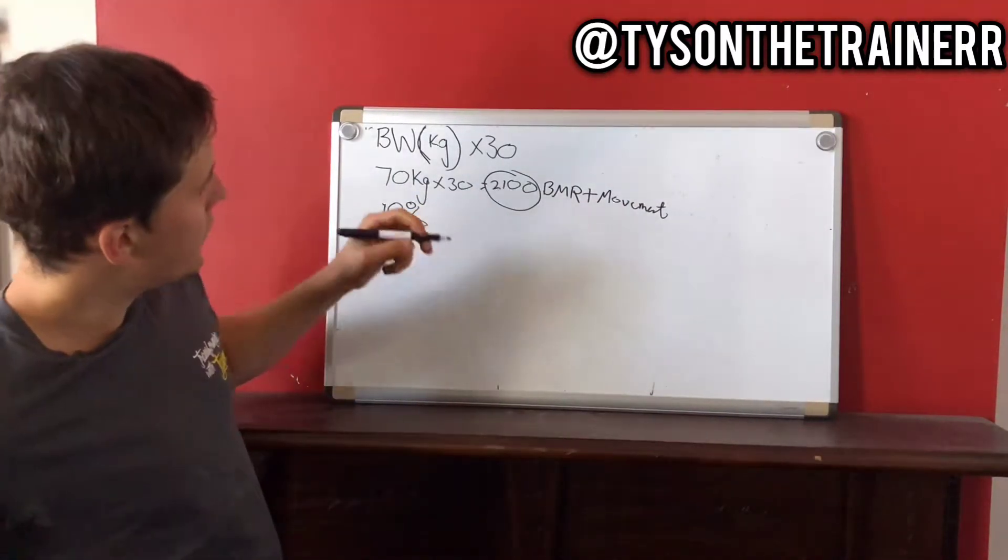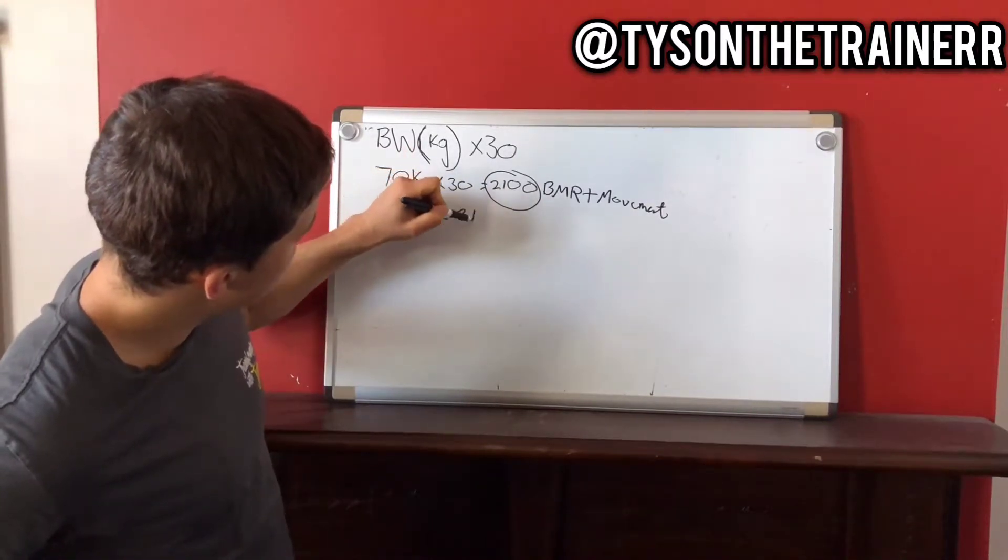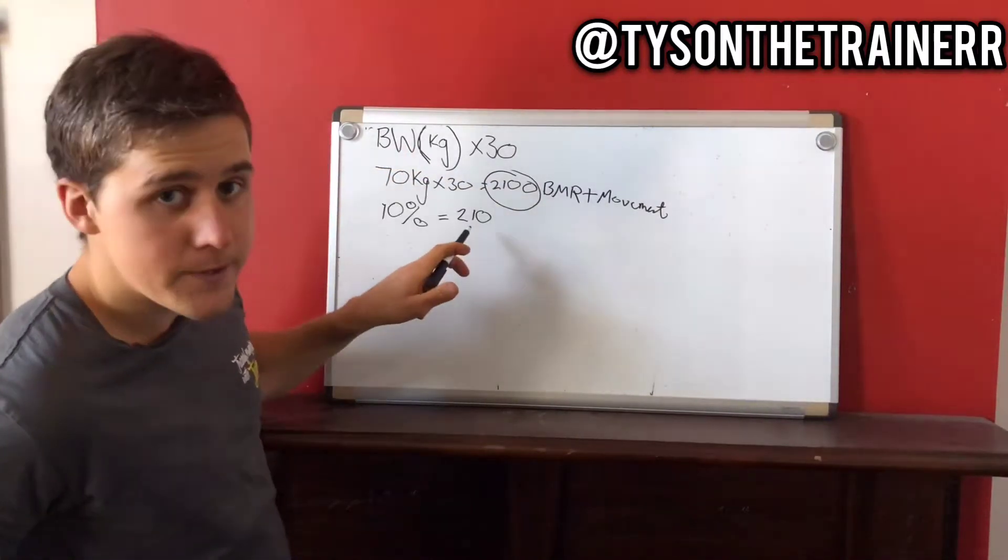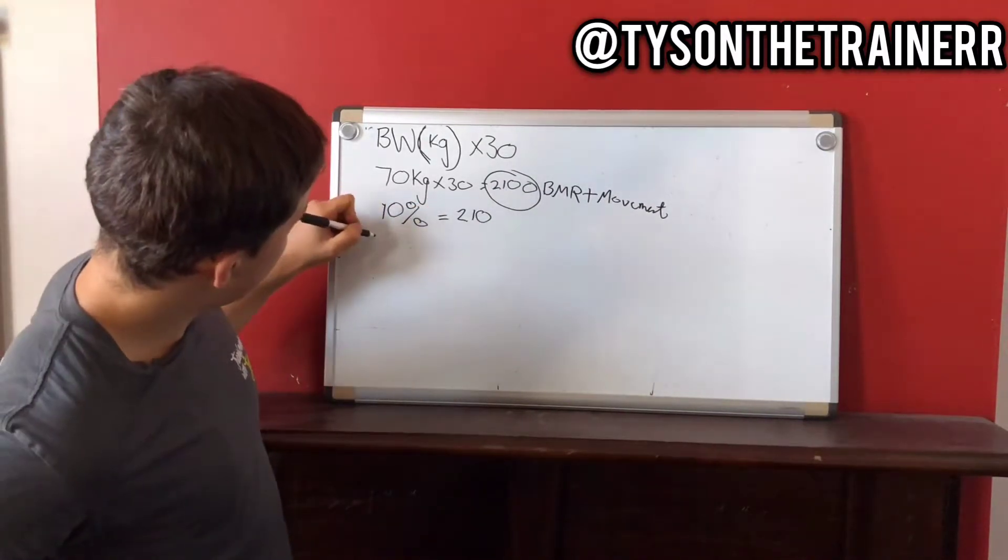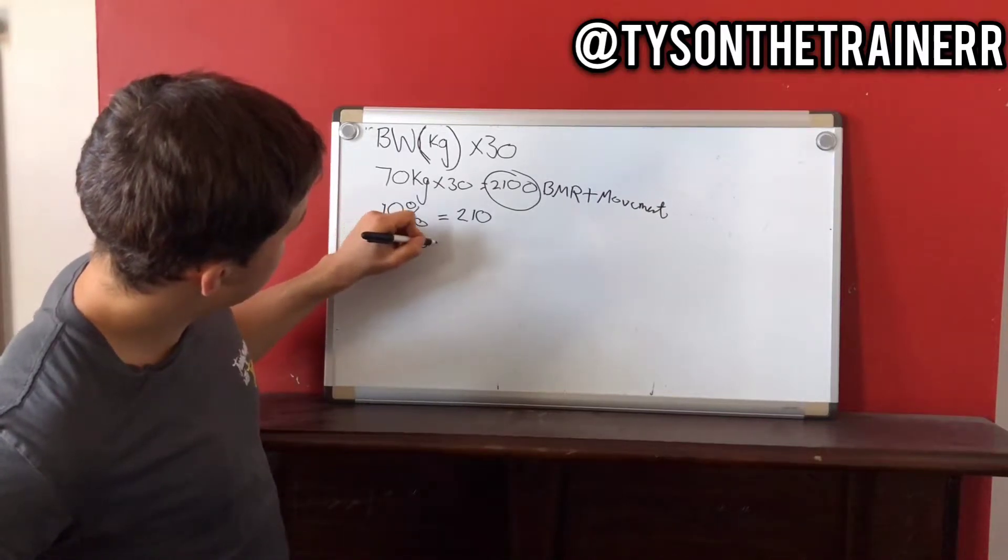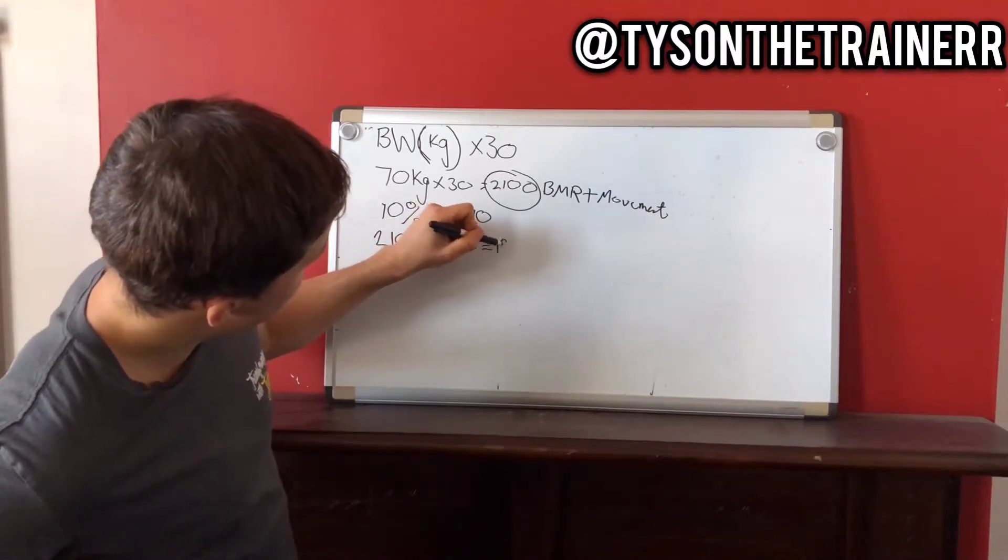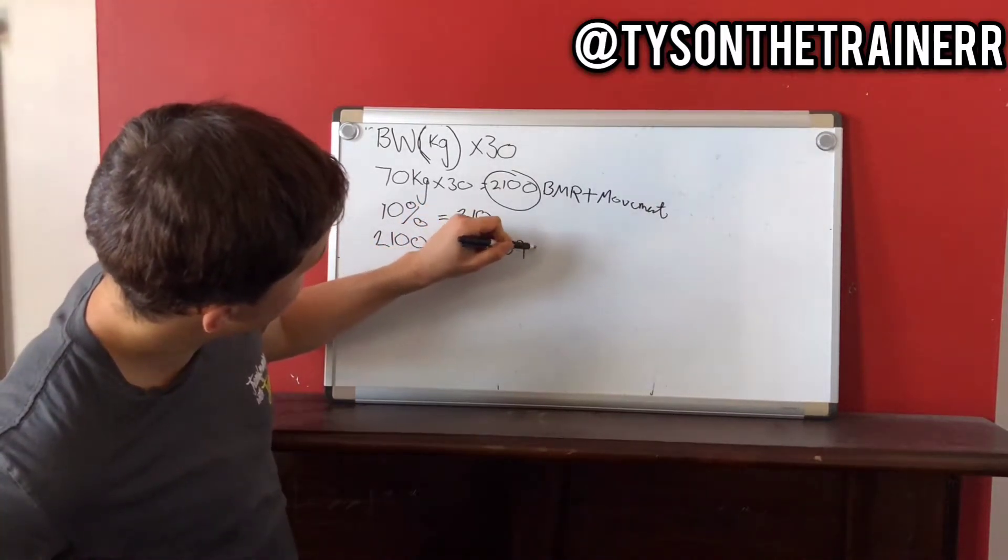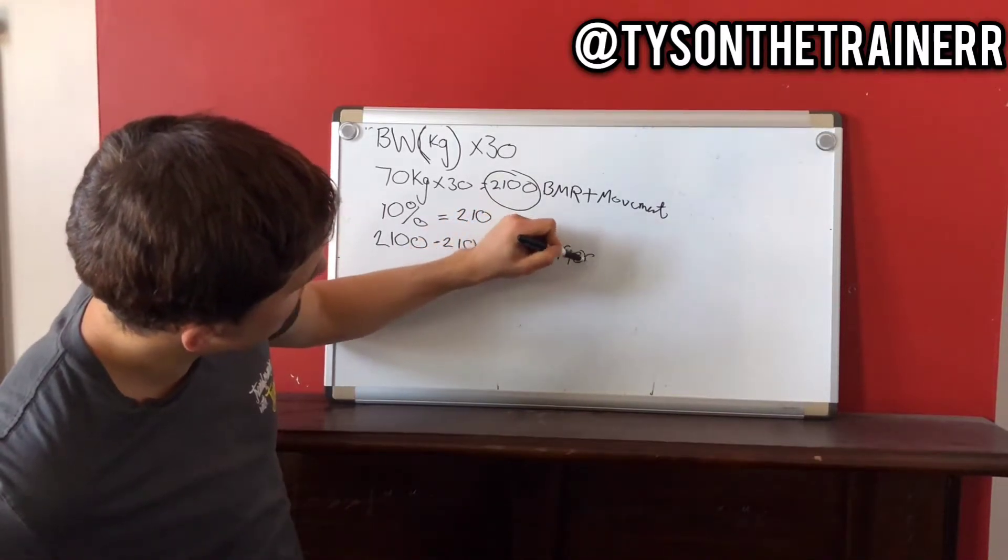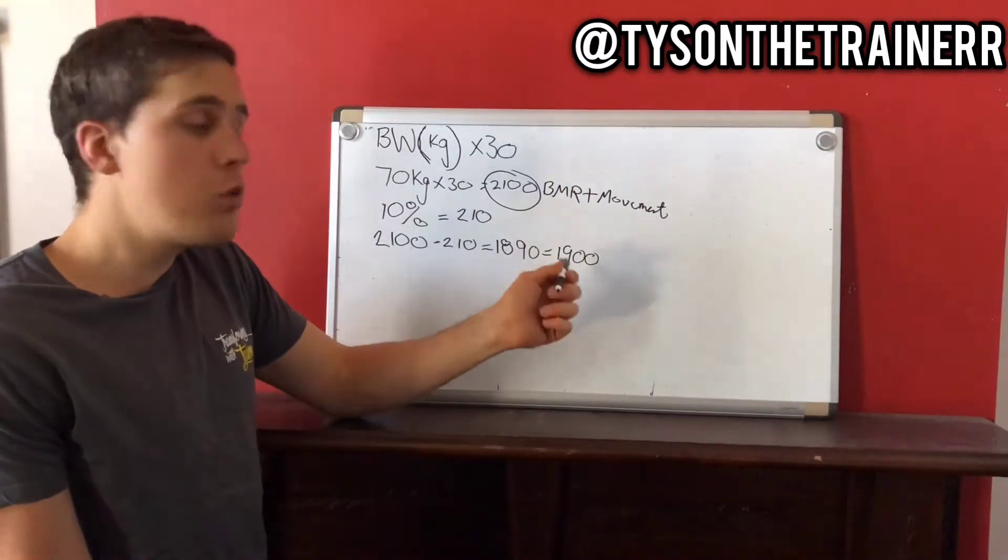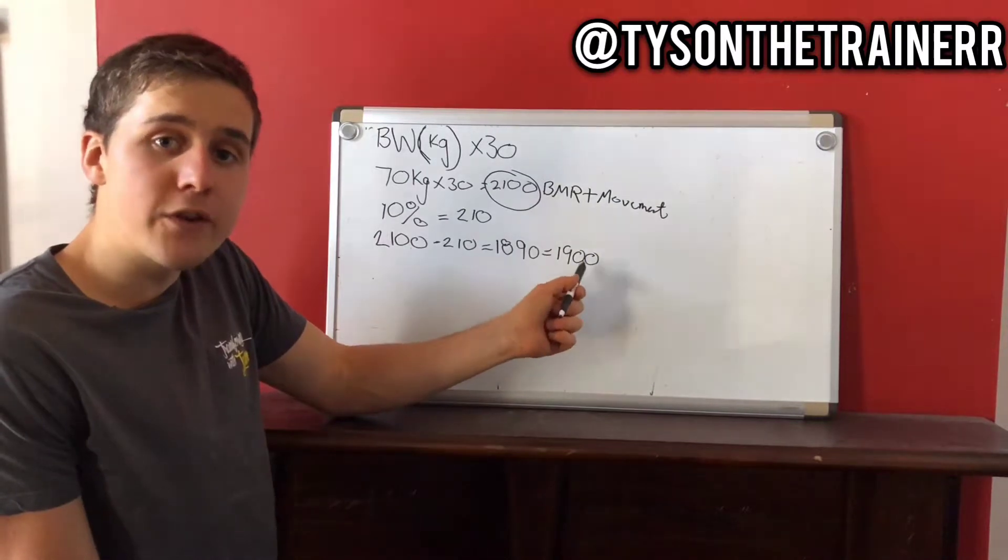So 10% of 2,100 equals 210 calories. So what we want to do is we want to take away 210 calories from here. So just for the sake of it, if you want to slow weight loss progress, then 1,900 calories is what you would want to be aiming for every single day.